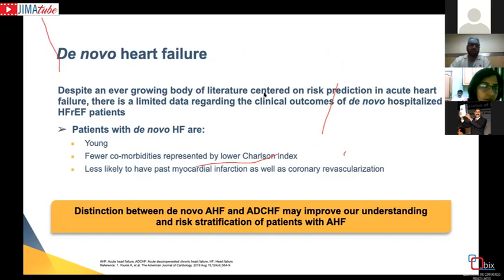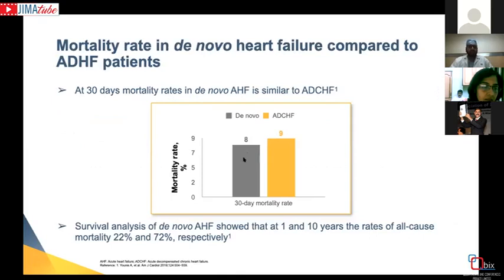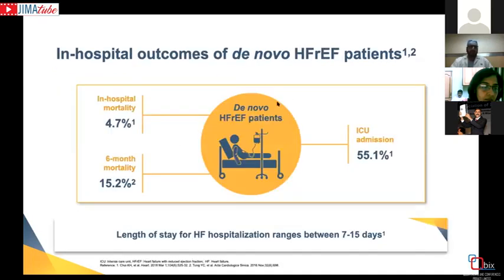De novo hospitalized heart failure patients are usually younger, unlike patients with pre-existing heart disease who are typically older. They have fewer comorbidities and are less likely to have ischemia or prior coronary revascularization. These patients present earlier and have often not been tried on multiple medicines. Importantly, the difference in mortality is not significant — the 30-day mortality is almost similar whether it's acute decompensated heart failure in a chronic patient or de novo heart failure, with no difference in in-hospital, six-month, or longer-term mortality outcomes.